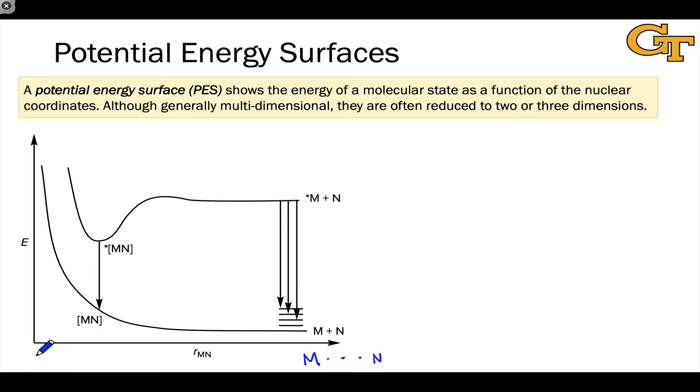And on the left-hand side, we're getting to a situation where M and N are much closer together in space. That's the x-axis of a potential energy surface. It plots some kind of reaction coordinate or nuclear coordinate, where out to the right generally means more loosely bound, more farther separated.